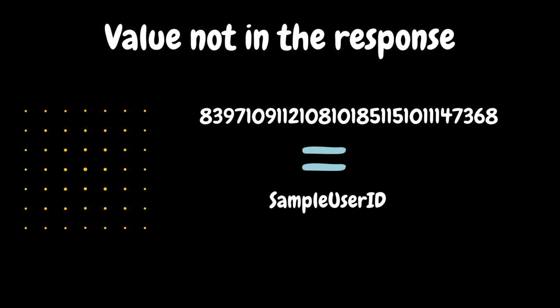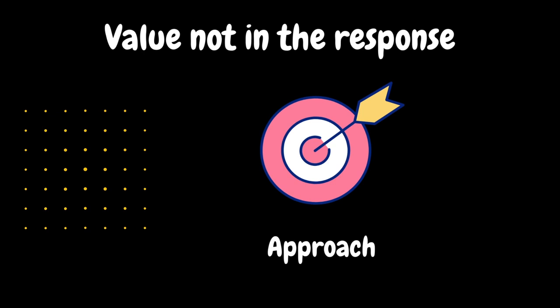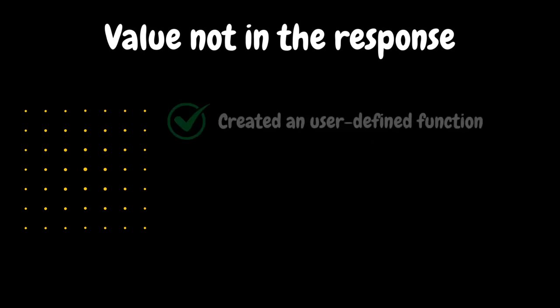ASCII is the American Standard Code for Information Interchange — a character encoding format. For English alphabet, digits, or other symbols, all characters are encoded to numeric values. For example, 'S' is 83 and 'A' is 97. To handle this, you can create a custom user-defined function. That function takes the user's response as input and converts the value using ASCII format.